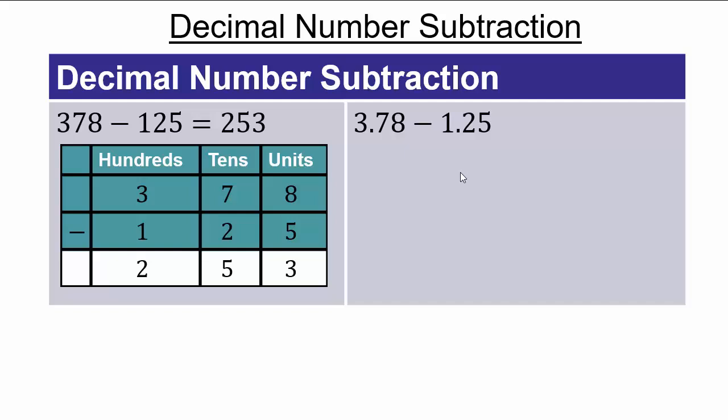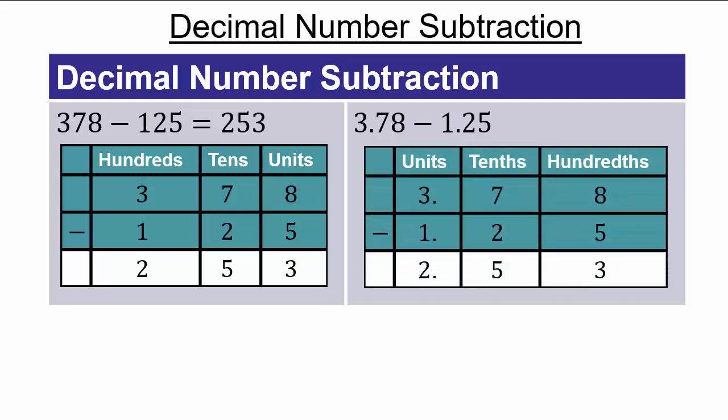If you've come back from pausing, it uses exactly the same principles except each digit is now in a different place value. The 3, instead of being in the hundreds place, is now in the units place. The 7, which was in the tens place, is now in the tenths place. The 8, which was in the units place, is now in the hundredths place. So 8 hundredths minus 5 hundredths gives 3 hundredths, 7 tenths minus 2 tenths gives 5 tenths, and 3 units minus 1 unit gives 2 units. The answer is 2.53.